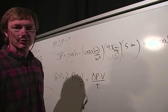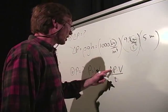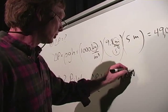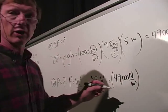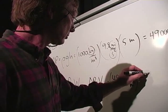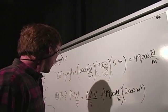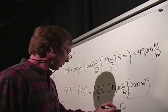Oh, I should change that 12 hours. So here we go. I've got 49,000 newtons per meter squared. I'm filling it up, volume of 2,000 cubic meters. And I'm doing it at a time of 12 hours.